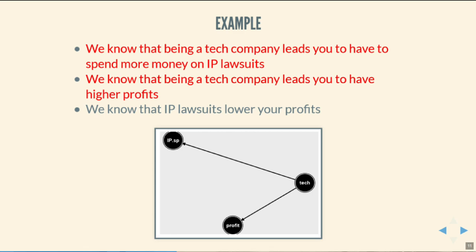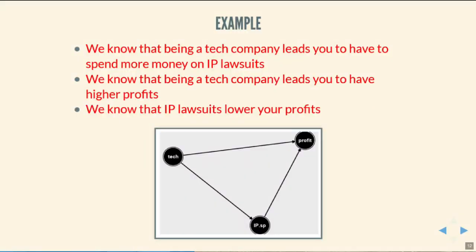Now assumption two: being a tech company might affect your profits. We add 'profits' as a variable with a circle, and draw an arrow from tech to profits — we're assuming causality runs in that direction. We do have to make these assumptions; without them we can't figure out the counterfactual. Lastly, assumption three: IP lawsuits lower your profits, not the other way around. You have to spend money on lawyers and such. So we draw an arrow from IP spend towards profits.